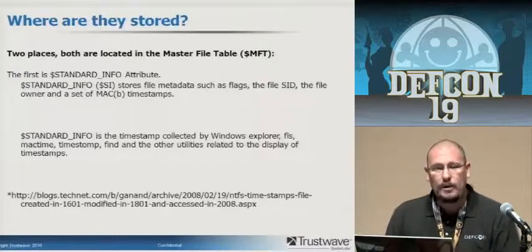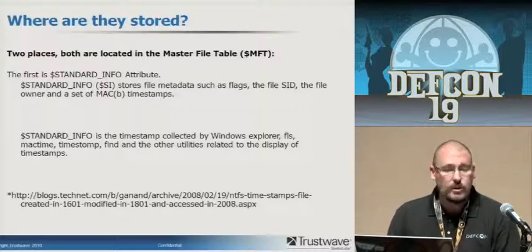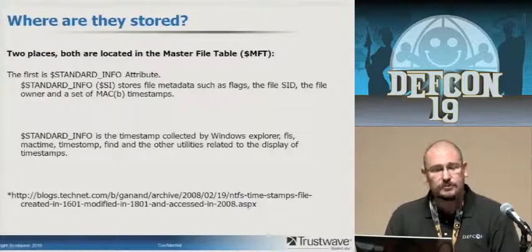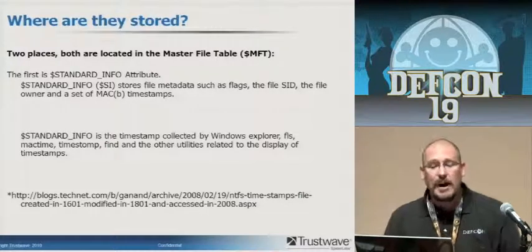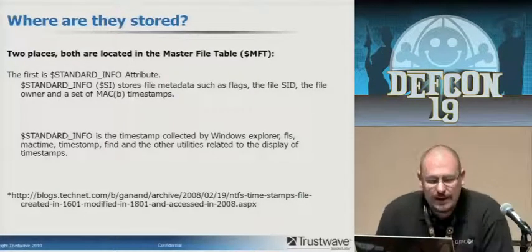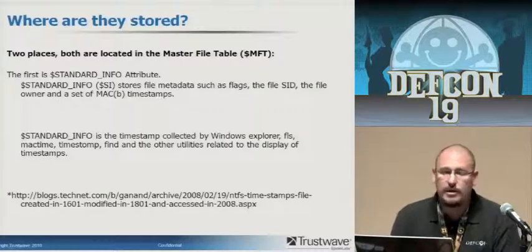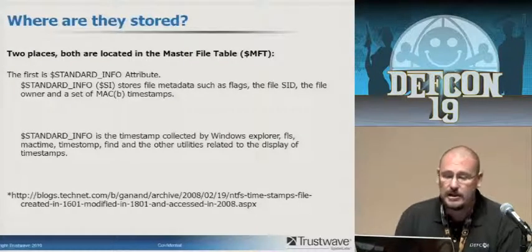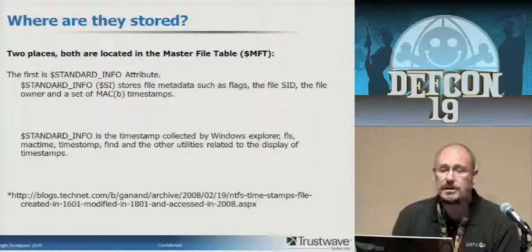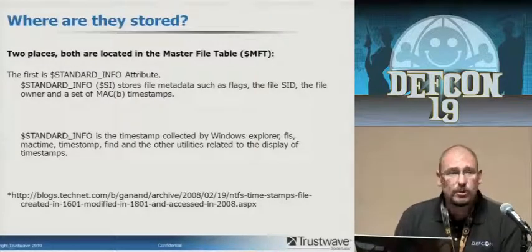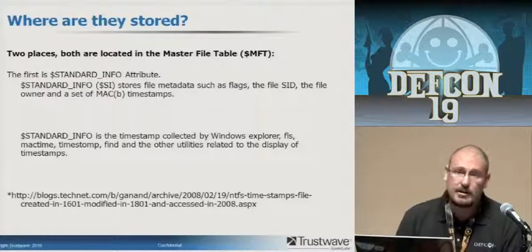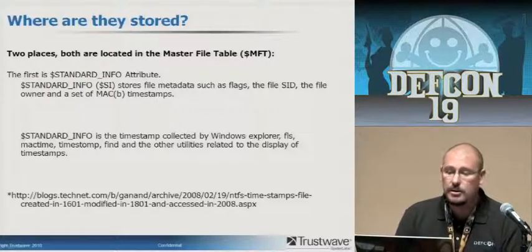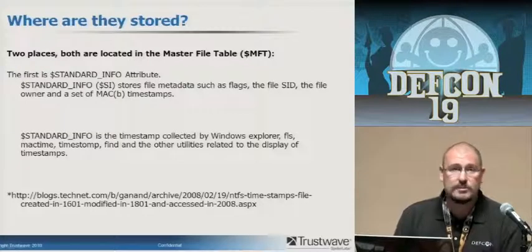So where the timestamps are stored — they're stored in two places, both located in the master file table. The first is the dollar standard info attribute, or SI attribute. It stores file metadata like flags, data about data, the file owner, and one set of MACB timestamps. This is the timestamp collected by Windows Explorer when you sort by date, or by utilities like FLS, MacTime, and timestomp — all utilities related to the display of timestamps pull from here.